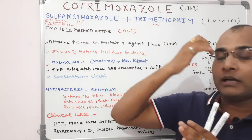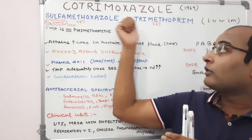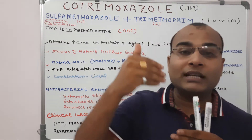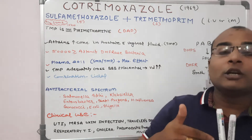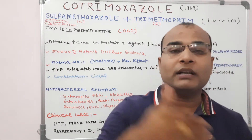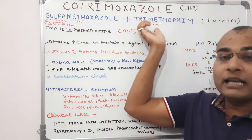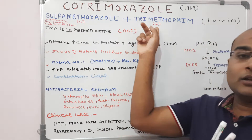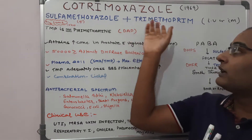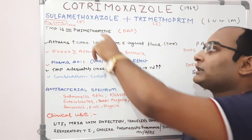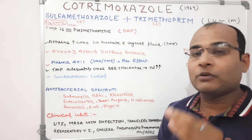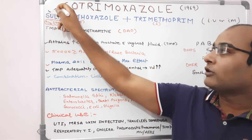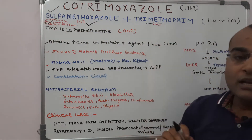The reason we take less Trimethoprim (only 1 part) is that Trimethoprim has high lipid solubility and the capability to penetrate the vascular compartment and go deeper into peripheral tissues, because it has a higher volume of distribution. Because of this higher volume of distribution, the amount we administer externally is kept in lesser quantity. The 5:1 ratio is important from an exam point of view.